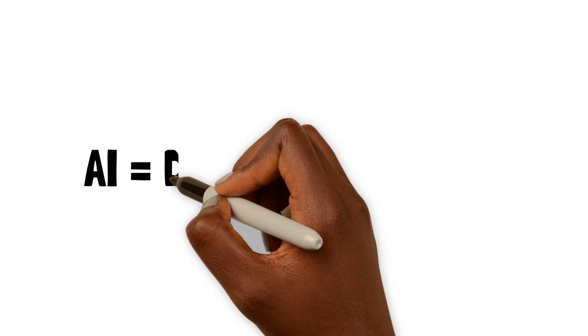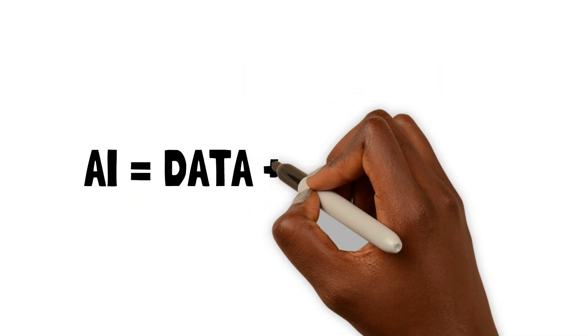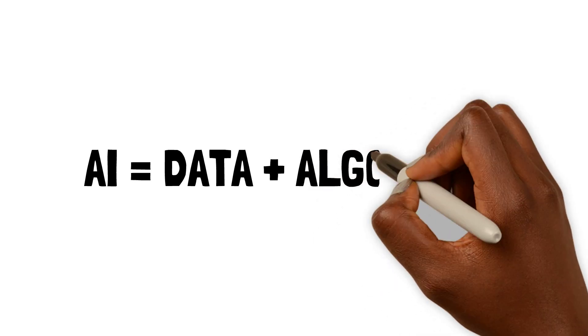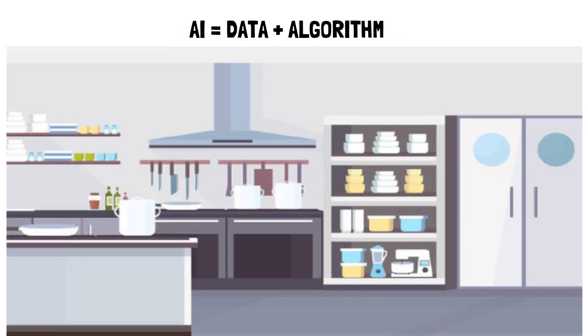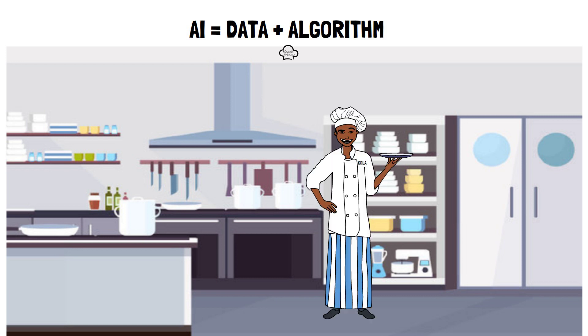To summarize, AI is like preparing a delicious Jollof rice. It's all about combining data, your raw rice, and the algorithm, your ingredients, leveraging machine learning, your cooking skills to create something wonderful, tasty, and yummy.